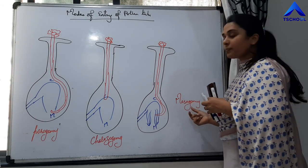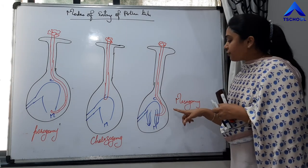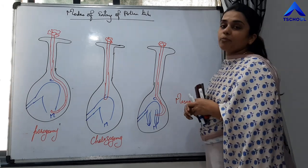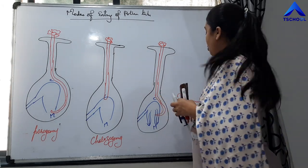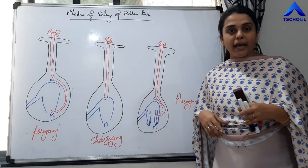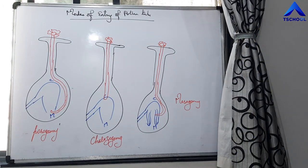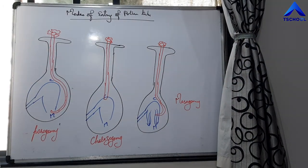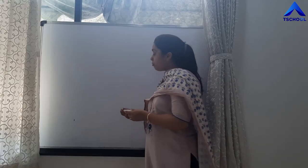And entry of the pollen tube through the integuments is called mesogamy. These are the three different modes of entry of the pollen tube.